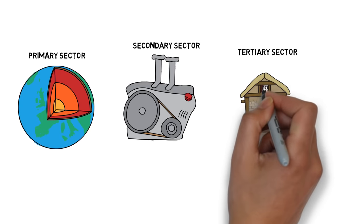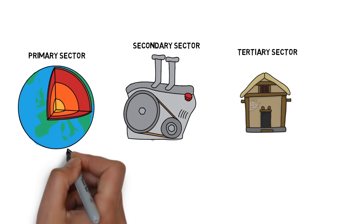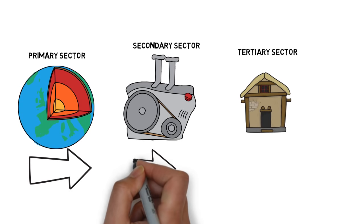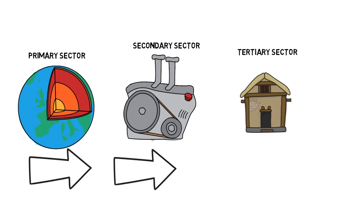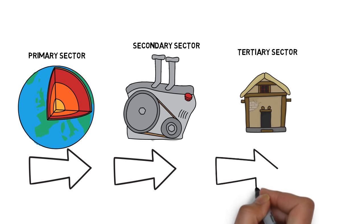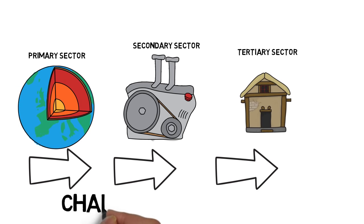All three sectors depend on each other. For example, a company that extracts oil from the Earth is Primary. A company that refines the oil so it's usable is Secondary. A company that brings the refined oil to a gas station near you is Tertiary. This is also known as the chain of production, which we'll cover in another video.